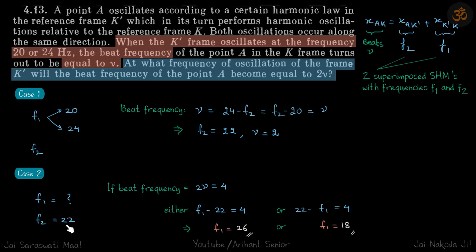In case 2, f2 is still 22. We're asked what f1 should be such that the beat frequency becomes 2ν, which means 4. If f2 is 22 and beat frequency is 4, then f1 must be 4 greater or 4 less than 22, which means f1 should be 26 or 18.